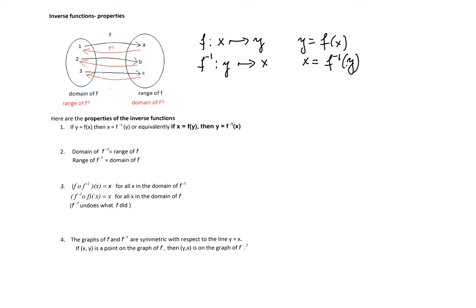Property number three is really definition of the inverse functions. So composition of f and f inverse is identity function. What does that mean is that the function f inverse undoes what function f did. So let's look at that diagram here.